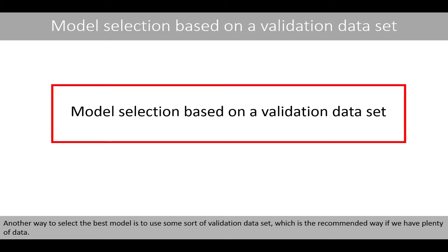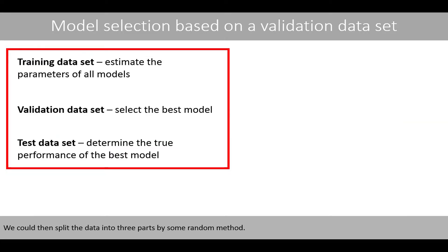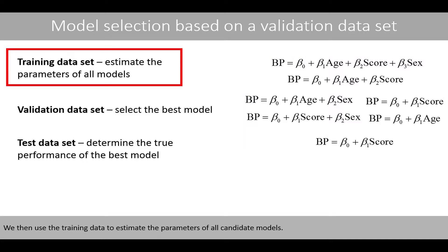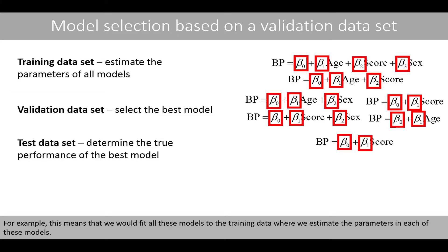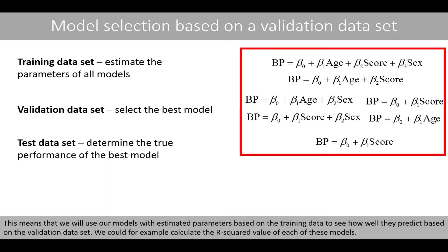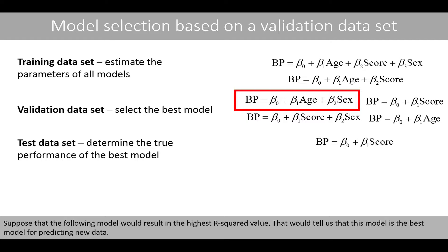Another way to select the best model is to use a validation dataset, which is the recommended way if we have plenty of data. We could then split the data into three parts by some random method. Then we create a number of candidate models that we like to compare. We then use the training data to estimate the parameters of all candidate models, fitting all these models to the training data. Then we use the validation dataset to select the model that fits best to the data — using our models with estimated parameters based on the training data to see how well they predict on the validation dataset. We could for example calculate the R-squared value of each of these models. Suppose that the following model would result in the highest R-squared value; that would tell us that this model is the best model for predicting new data.